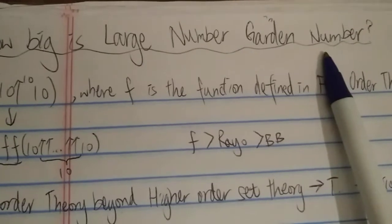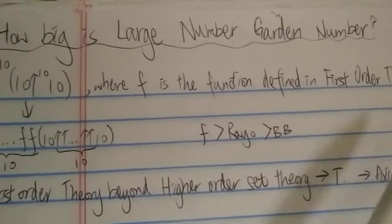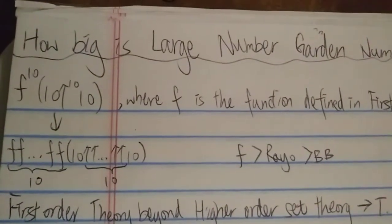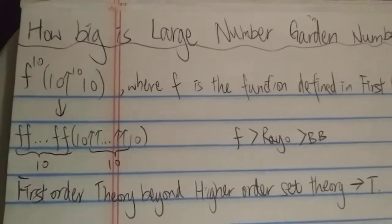It's basically recognized as the biggest named number in the Googology wiki. It's much, much, much bigger than Rayo's number, fish number 7, and all other ill-defined numbers.